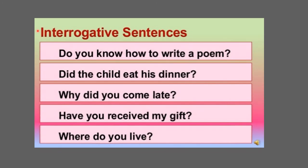Some more examples of interrogative sentences: 'Do you know how to write a poem?' 'Did the child eat his dinner?' 'Why did you come late?' 'Have you received my gift?' 'Where do you live?' An interrogative sentence ends with a question mark and begins with a question word. It can be a yes/no type question like 'Did the child eat his dinner?' or a wh-type question using why, where, how, etc., like 'How are you?'